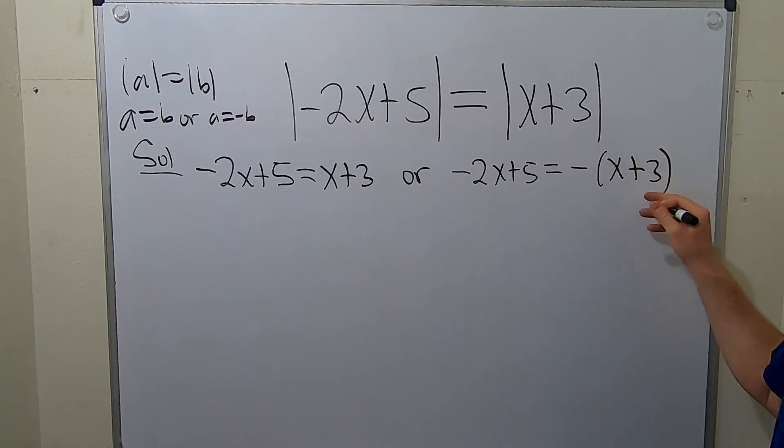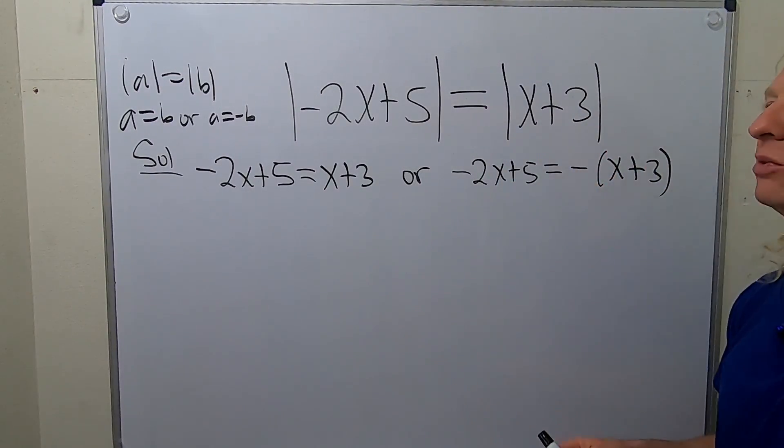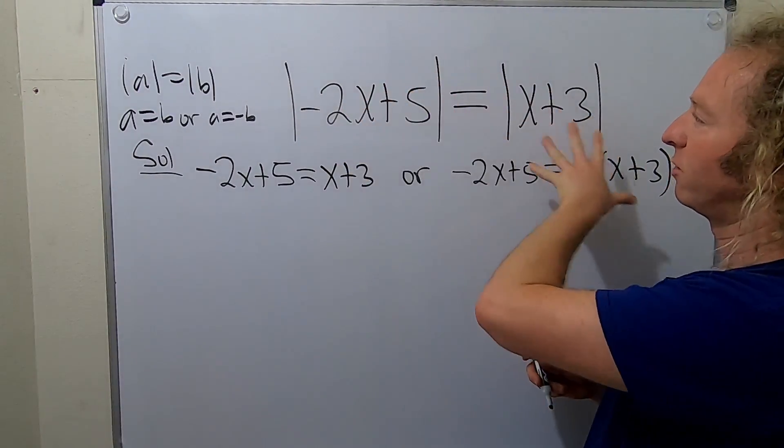Notice the parentheses. It's really important to have parentheses here when you do this. So when you have two absolute values, you drop them and you do a plus and you do a minus.